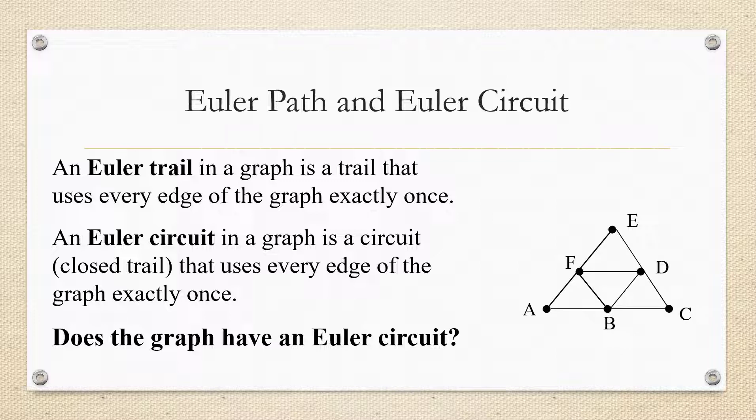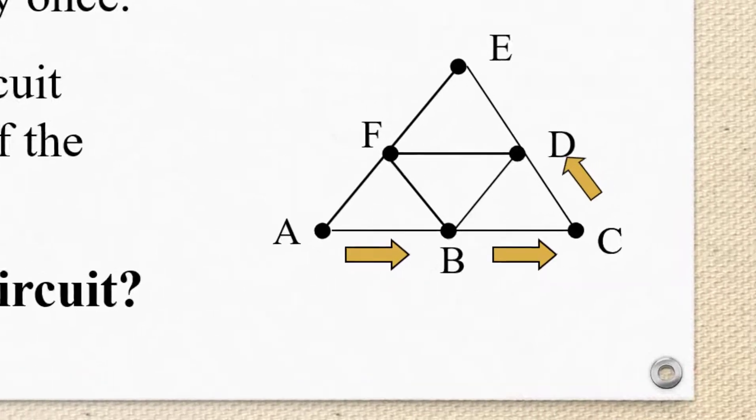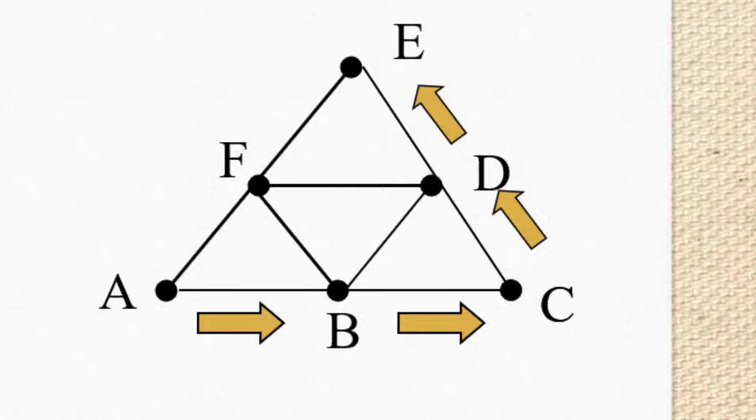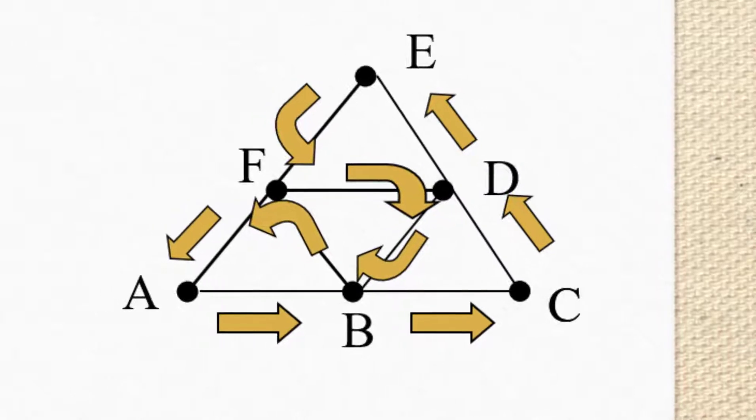Well, one way to figure that out, not the easiest way, but one way is to actually just look and see if you can find a way of navigating the graph beginning and ending at the same vertex covering each edge exactly once. So in this case, you might go from A to B, and then B to C, and then C to D, maybe up to E, then to F, turning in the middle there, over to D, down to B, back up to F, and then to A, returning to where we started.